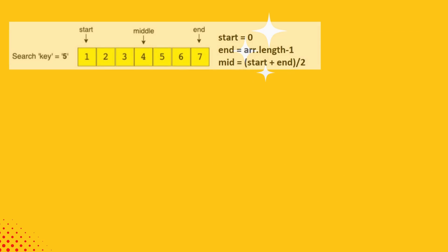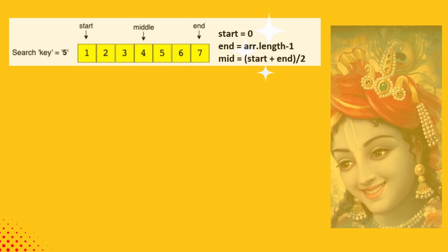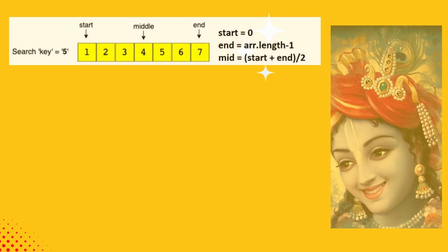Let us take an example of an array having the elements 1, 2, 3, 4, 5, 6, 7 and we need to search for number 5 in this array. As discussed earlier, we need to find the middle index of the array, which can be found by adding start index and end index divided by 2. In the first iteration, start index is initialized with value 0 and end index is initialized with value array length minus 1. Then we find the middle index by adding start index plus end index divided by 2.